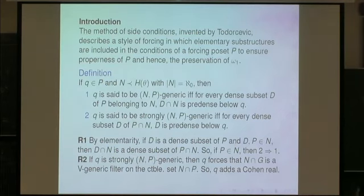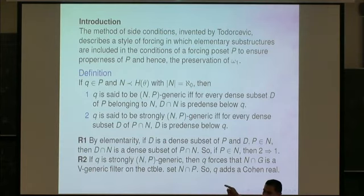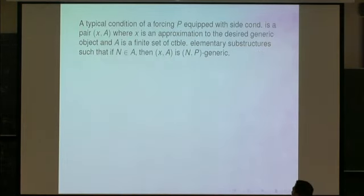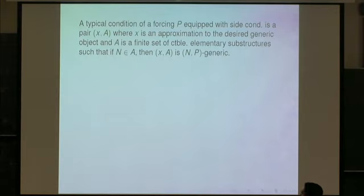The second remark is that if Q is strongly NP-generic, then Q forces that N intersection G is a D-generic filter on the countable set N intersection P, and therefore we are essentially coding a Cohen real — so Q adds a Cohen real. A typical condition of a forcing P equipped with a side condition is a pair (X, A), where X is an approximation to the desired generic object and A is a finite set of countable elementary substructures such that if N is in A, then the pair (X, A) is NP-generic.